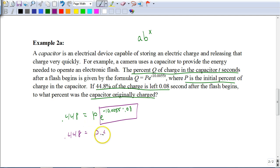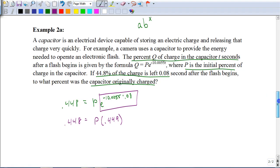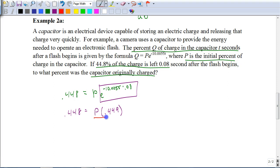So I have P times 0.449. So again, I'm trying to figure out that initial percent. So to find that initial percent, I'm going to divide both sides by 0.449. So here I get my initial percent of 0.998, which again, as a percent, we would write this as 99.8% when it was originally charged.